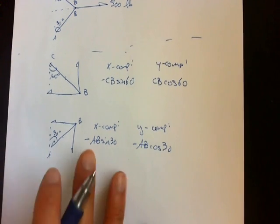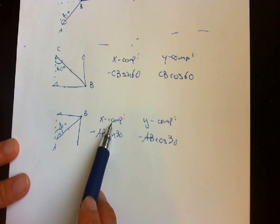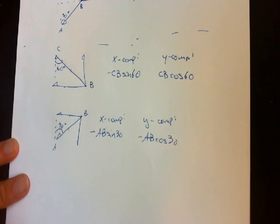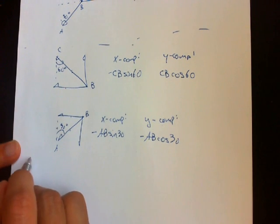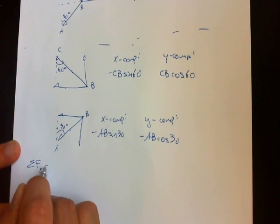At this point, you sum all the forces in the X component and Y component and set them equal to zero. Sum the forces in FX equals zero.